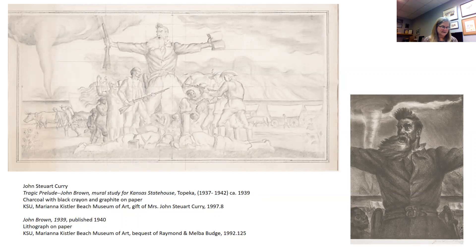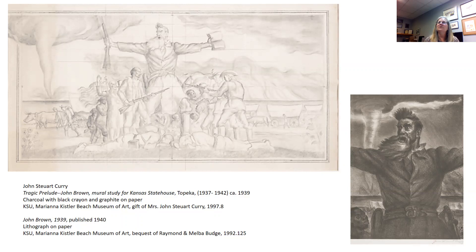Brown was an abolitionist who moved to Kansas to fight for a free state. He took his name, Osawatomi Brown, from a number of raids and battles that he fought in Kansas pre-Civil War. His final event was the raid on Harpers Ferry in Virginia, where he tried to steal guns from the armory to arm black slaves to fight against slavery. In Curry's depiction, Brown is shown as a hero — larger than life, but also a terrifying warrior for his cause. The Bible he is holding indicates that he really felt he had been sent by God.